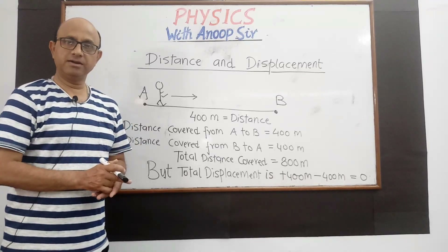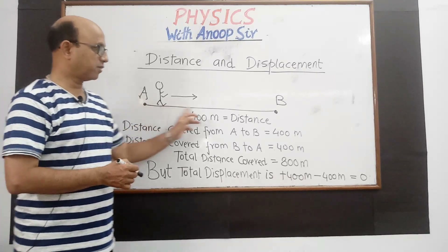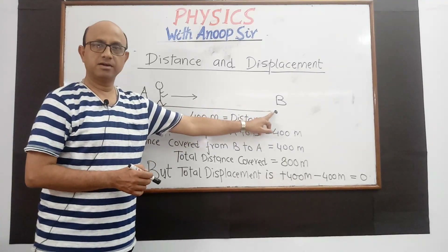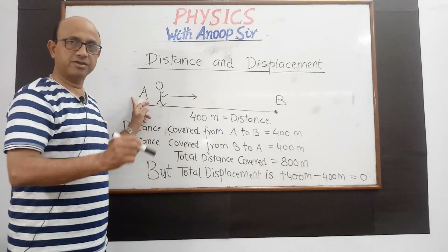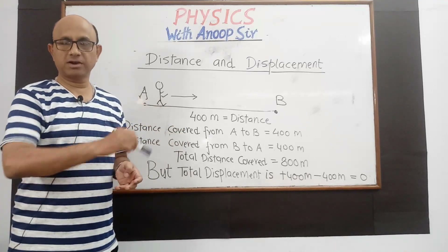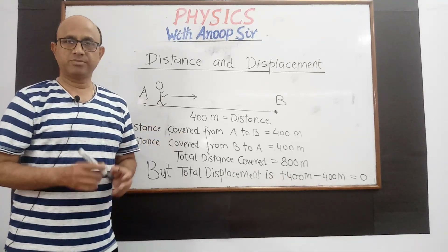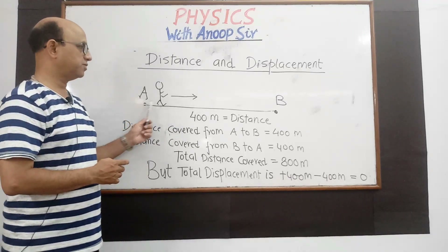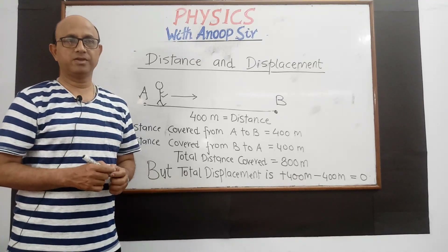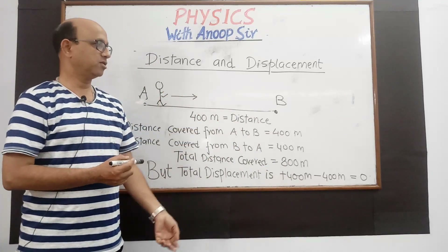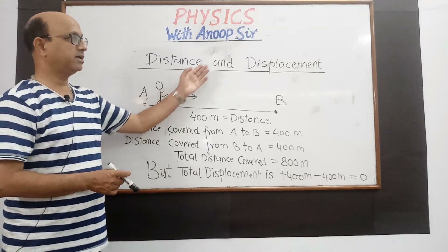Distance is a scalar quantity and displacement is a vector quantity. Distance is the total path covered — किसी भी रास्ते से जा रहे हैं, उस रास्ते की लंबाई distance है। But displacement is the change in position — हम change of position के respect में बात करते हैं। A से B की direction में change in position plus 400 और B से A में minus 400 आया। इसी तरह हम difference between distance and displacement को समझते हैं।